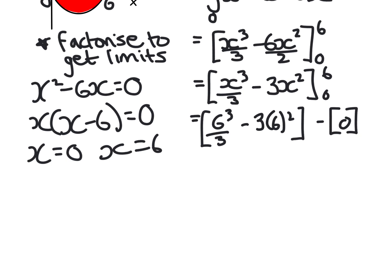Leave it more space. OK. 6 cubed is, I've done this already, is 216 over 3. So I'm going to write that in. 216 over 3. Take away 6 squared is 36 times 3 is 108. I don't need to take away zero now. Right, 216 divided by 3. I can picture the sum and see that that's 72. Take away 108, which is negative 36. Now, hold on. Your area can't be negative.